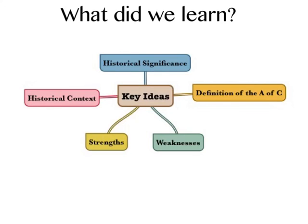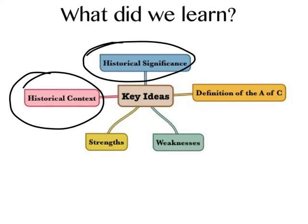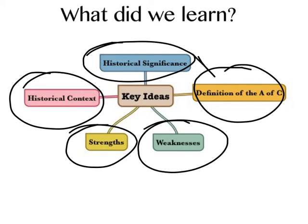So what did we learn? We learned about the big picture historical context of what led up to the development of the Articles. We learned why they were significant — because they were the first form of government in the United States, which is also the definition. We learned about the strengths — including the passing of the Northwest Ordinance and protection from a tyrannical central government — and we learned about the weaknesses: it was so non-central that it couldn't maintain control over national issues. I hope you learned what you need to and I'll see you next time.